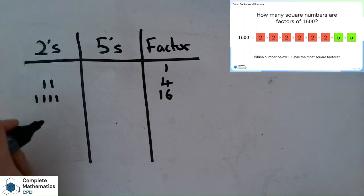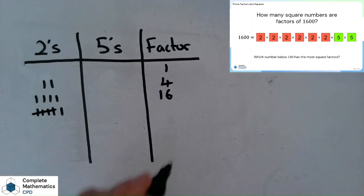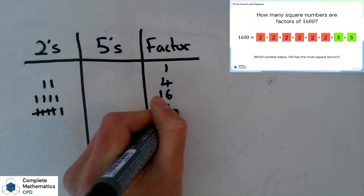Or I might have all 6 of the 2s: 1, 2, 3, 4, 5, 6. And that will give me a square factor of 64.